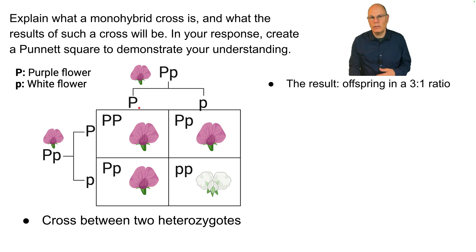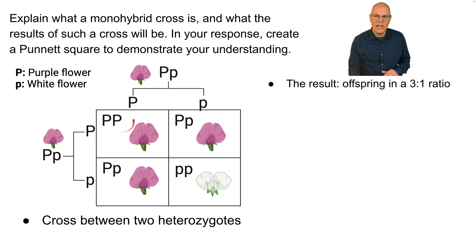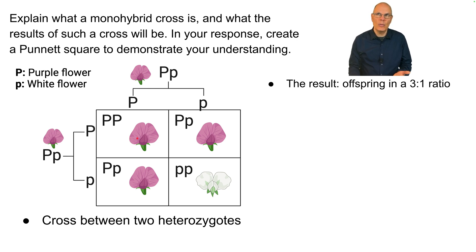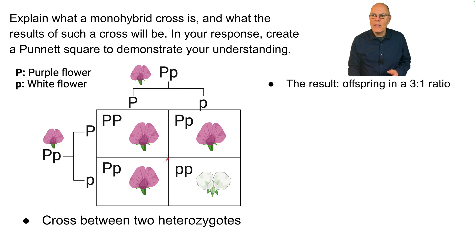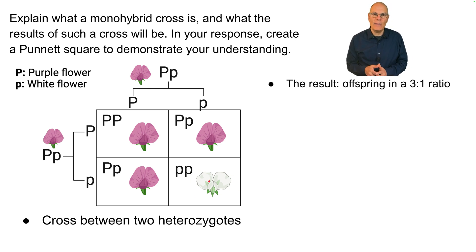The gametes then fertilize one another — the pollen, equivalent to sperm, fertilizes the egg. Combining the gametes: one offspring is capital P, capital P — homozygous dominant with the dominant phenotype. Another gets big P and little p — a heterozygote that still has the dominant phenotype. The same is true for the next. One offspring gets two little p's, one from each parent, and as a result shows the recessive phenotype: white flowers.